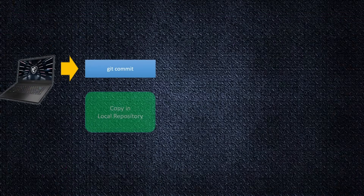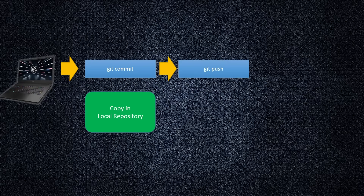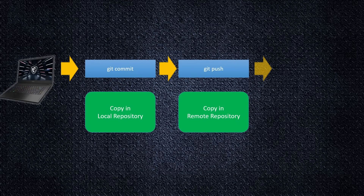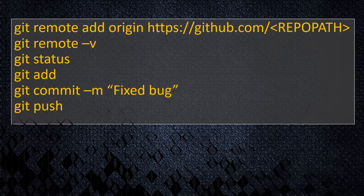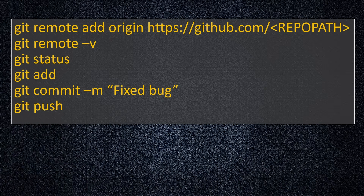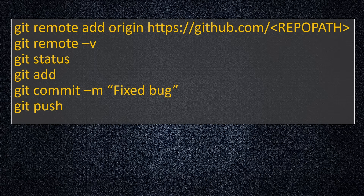Just a short recap of what we did. Our developer executes git commit, which creates a copy in the local repository on their laptop. After that they execute git push, which creates a copy in the remote repository on GitHub. The commands we used today: git remote add origin with HTTPS repo path, git remote -v to show what is configured as the remote repository, git status, git add, git commit, and git push. I hope you enjoyed it — see you in the next lecture, where we'll get rid of this username and token prompting.